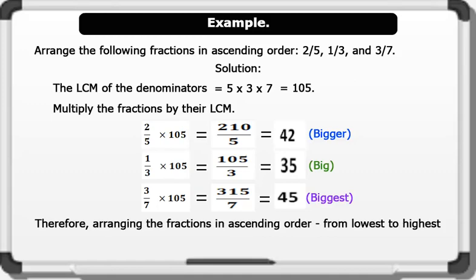Therefore, arranging the fractions in ascending order from the lowest to the highest equals 1/3, 2/5, and 3/7. That's brilliant.